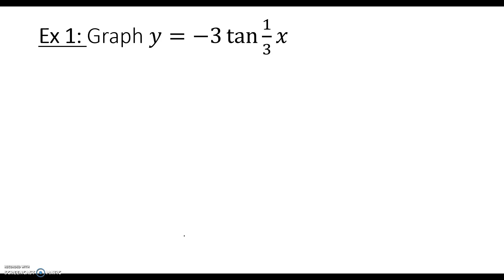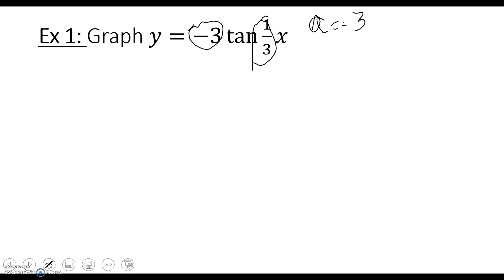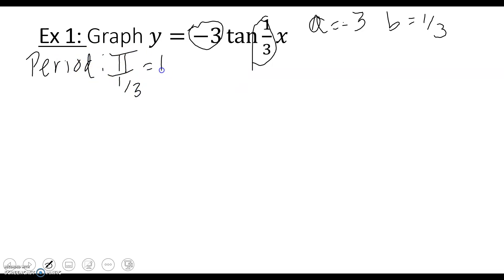In order to graph this, I notice there's an a value — which before changed amplitude, but we don't have amplitude with tangent and cotangent. However, it does affect the y values, so that negative 3 is what you multiply your y values by. The number in front of x affects our period, so b = 1/3. Our new period is π ÷ (1/3), which equals π × 3 = 3π.